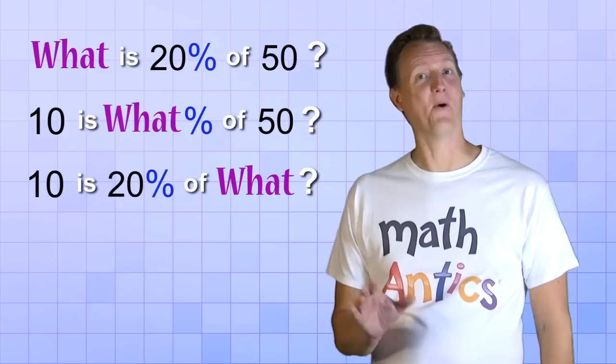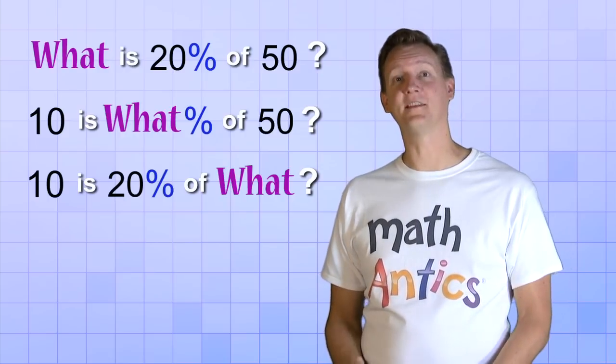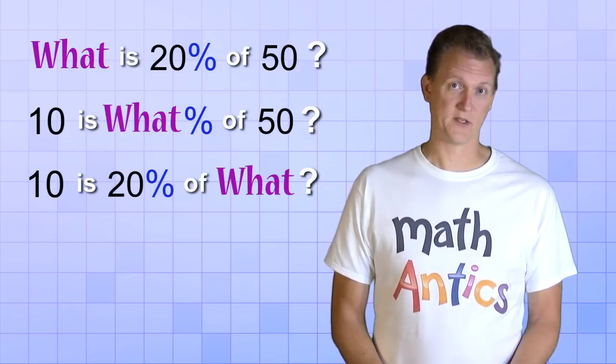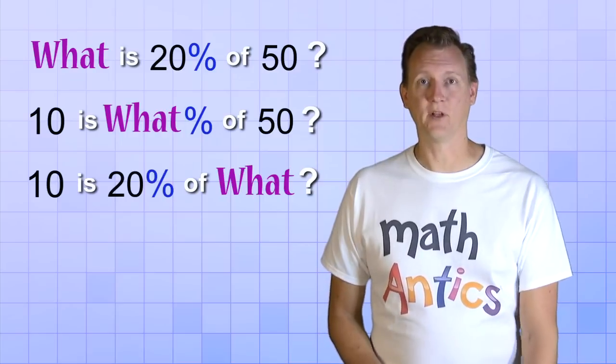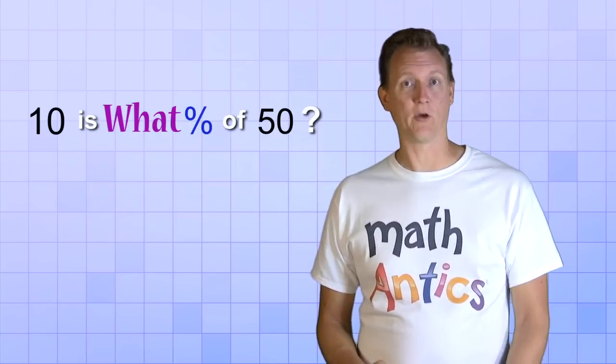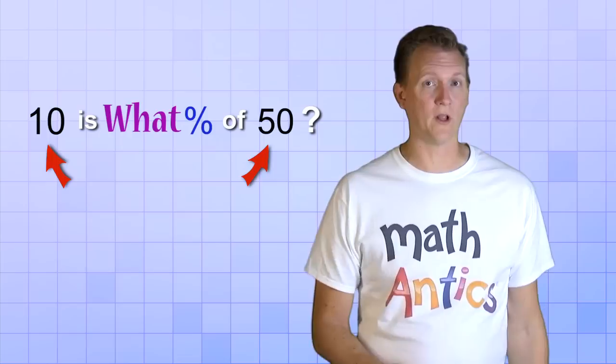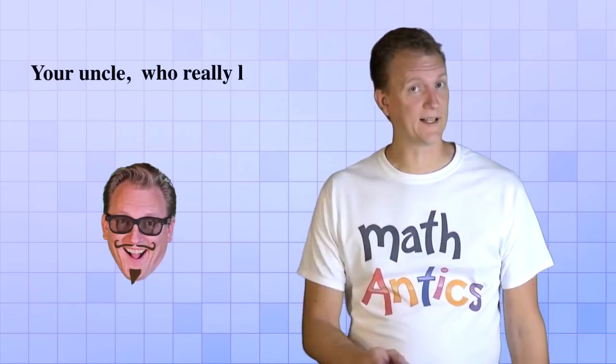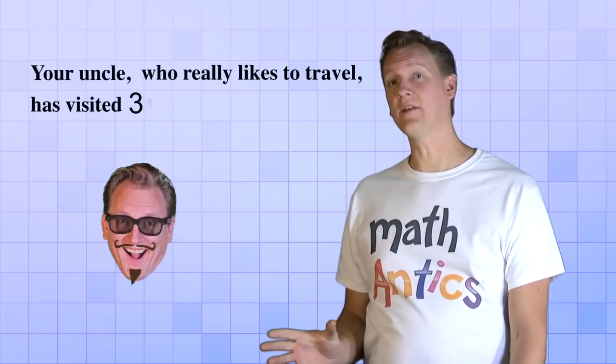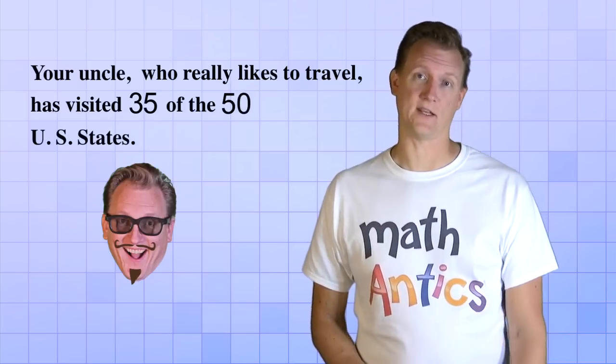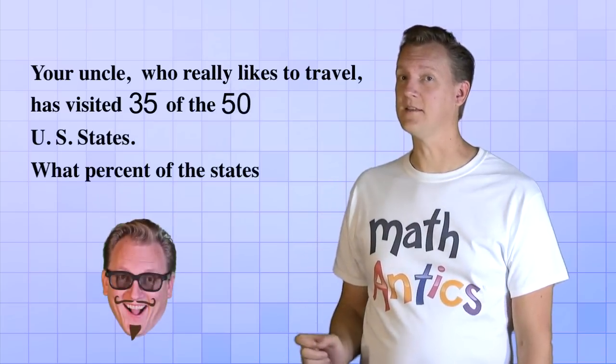Have I lost you yet? Don't worry, it'll make a lot more sense after we look at a few examples. So, let's look at an example of a type 2 problem, where we know the part we have, and we know the total, but we don't know what the percent is. This example is a word problem, and it says, Your uncle, who really likes to travel, has visited 35 of the 50 US states. What percent of the states has he visited?